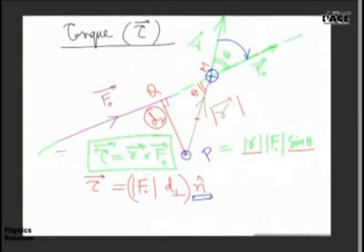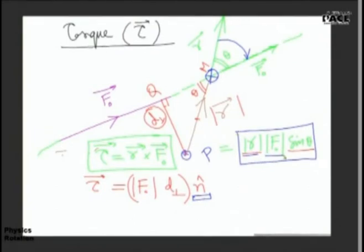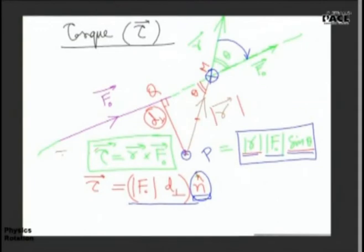So please understand: torque due to a force F₀ is given by R cross F, which equals magnitude of R times F₀ times sin theta, which in turn equals F times the perpendicular distance from the point about which torque is to be found to the line of action of force. The direction is found according to the cross product rule. Now let's move on to numericals based on this.